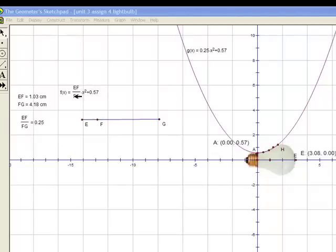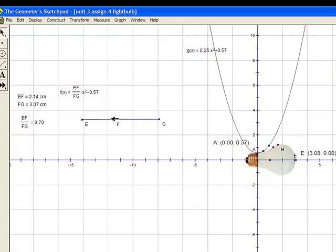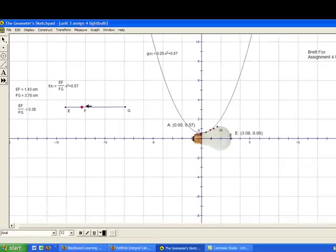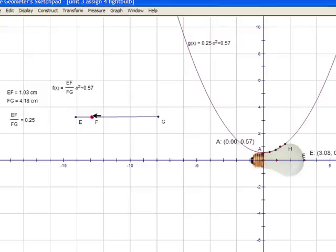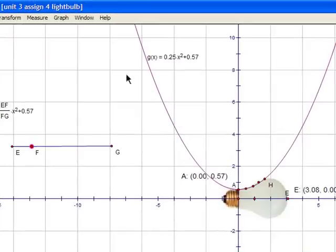And then I set that as the slope of the parabola. And this would change the parabola based on how I moved the slider. And I approximated it to meet with that point H on the end of the light bulb. So that parabola approximates this part of the light bulb.